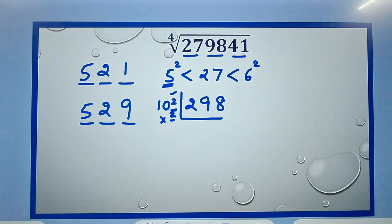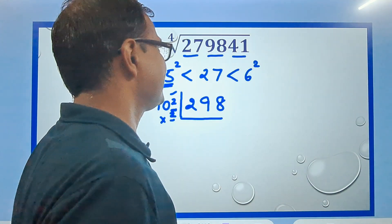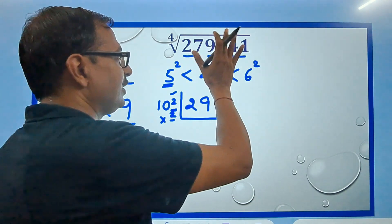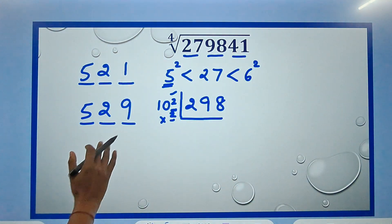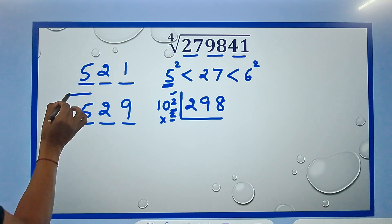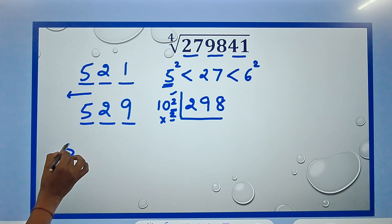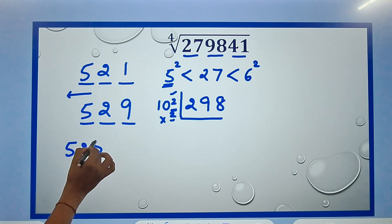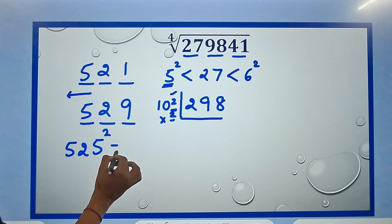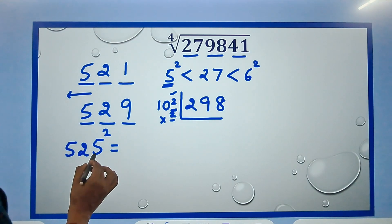Now my answer is either 521 or 529. Now to find out what is the square root of 279841 among these two, which one is the correct one? I will take the intermediate number which is 525.